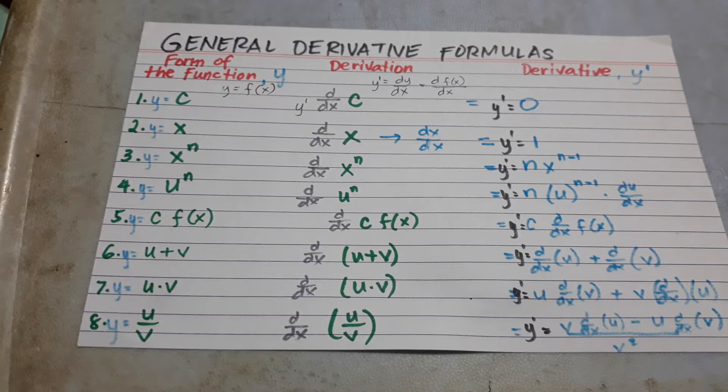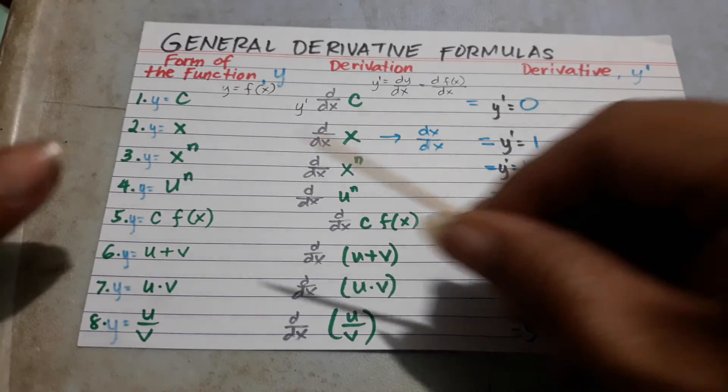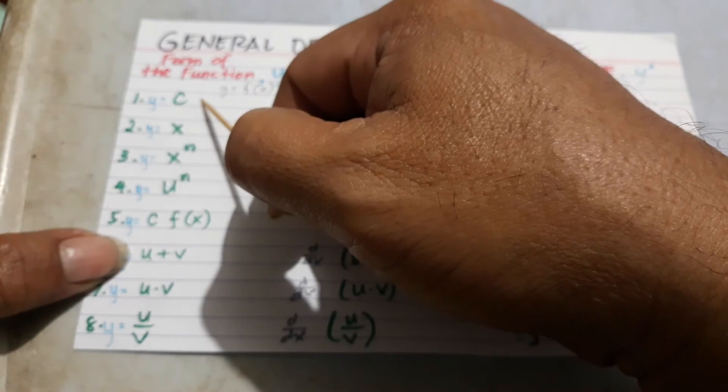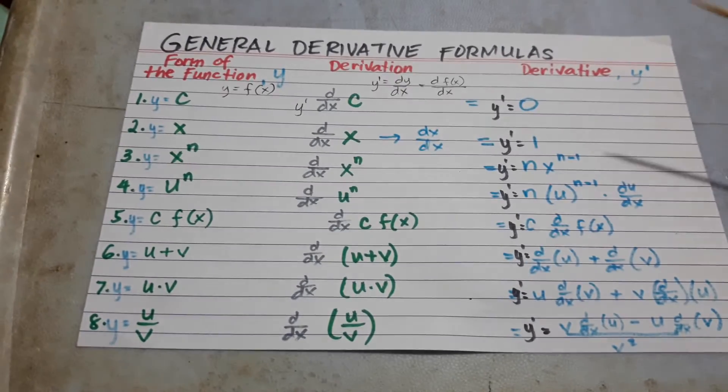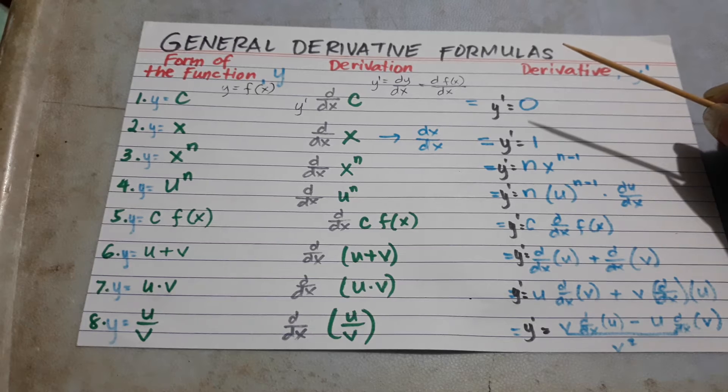So, let us have a review of the general derivative formulas. If the form of the function, number 1, is C, then it means that the derivative of that is 0.